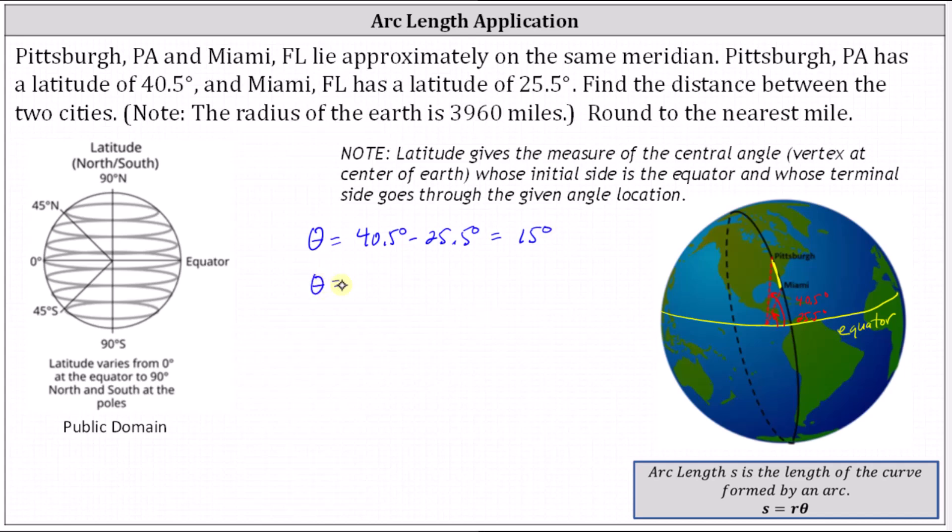Theta in radians is equal to 15 degrees times pi radians divided by 180 degrees, which gives us 15 divided by 180 pi radians, which simplifies to 1 twelfth pi radians, or pi divided by 12 radians.